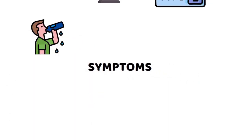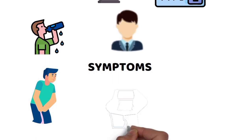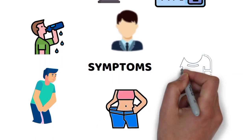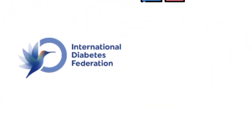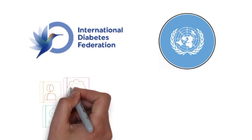Common symptoms include feeling very thirsty, frequent urination, blurred vision, unintentional weight loss, and fatigue. The International Diabetes Federation and World Health Organization provide valuable resources on symptom recognition.